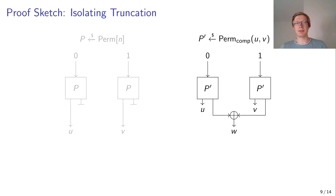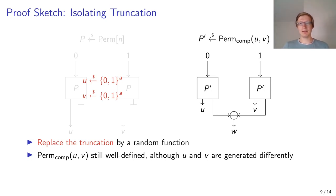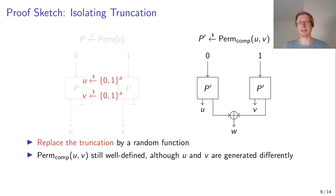So first we look at the truncation part. As it is just normal truncation, we can replace it by a random function, and as we know, truncation behaves pretty well like a PRP-PRF conversion, so we can do this without too much security loss. And for our summation construction, we see that it doesn't really matter that we have replaced our truncation, because our definition only depends on U and V. And although those are now generated by a random function instead of truncation, our definition is still well defined, so we can still look at this construction.